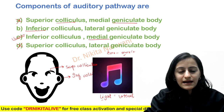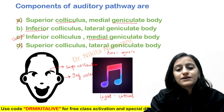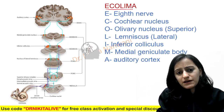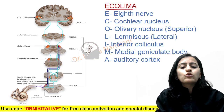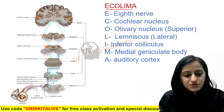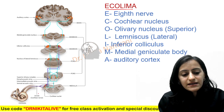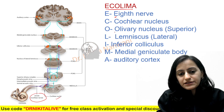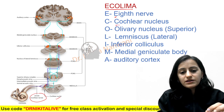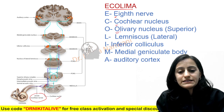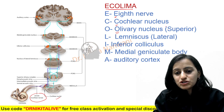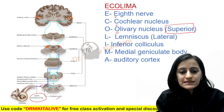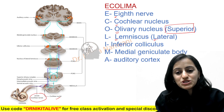Now let us look at the entire auditory pathway. The mnemonic to remember it is E COLIMA. E is the eighth nerve, C is the cochlear nucleus, O is the olivary nucleus — specifically the superior olivary nucleus, L is the lemniscus — which lemniscus? The lateral lemniscus.